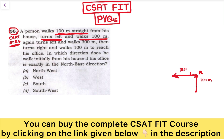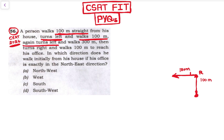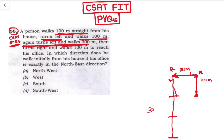Again he turns left and walks. Let's mark the starting point here. He turns left and walks. Now he is facing this side — his left hand is this side and right hand is this side. Then he turns left and walks 300 meters, so 100, 200, 300 meters — he is now here in this direction.